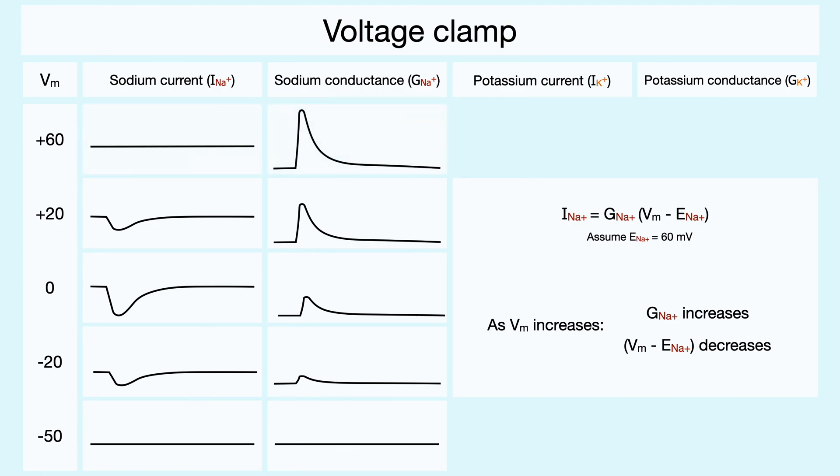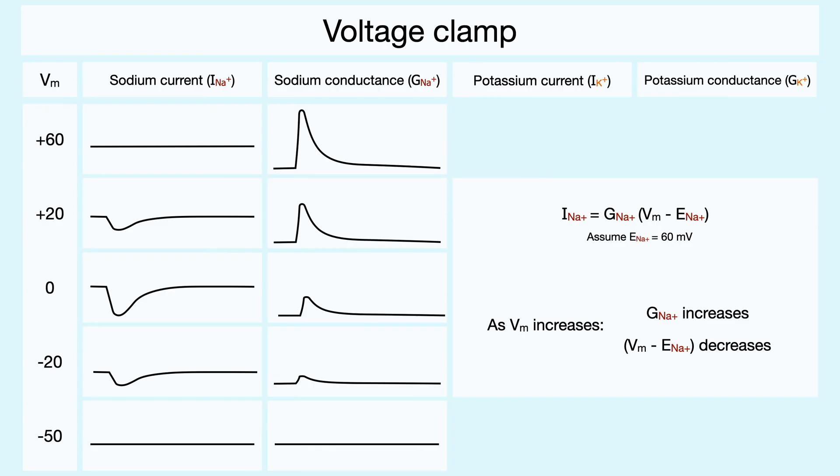Indeed, when we consider the plots at 60 millivolts, you can see that there is no net current, even though the conductance is very high, and that is caused because the driving force is 0.